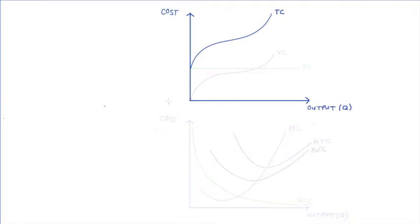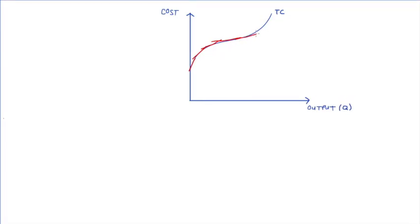It's best to start with our total cost curve. We have a measure of quantity or output on the horizontal axis and costs on the vertical axis. So as we increase quantity, our costs always increase — initially at a decreasing rate, so the slope gets flatter, and then at an increasing rate, where the slope gets steeper. I'm going to decompose our total costs (TC) into a fixed component, fixed costs (FC), and variable costs (VC).